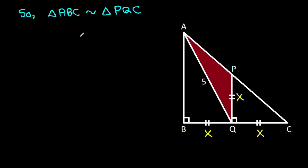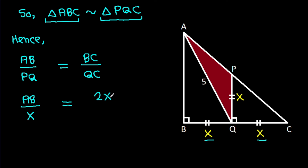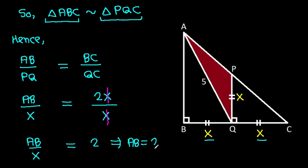Since these two triangles are similar, AB over PQ will be equal to BC over QC. AB over PQ is X, and BC equals X plus X which is 2X, over QC which is X. So AB over X is 2, meaning AB will be 2X.